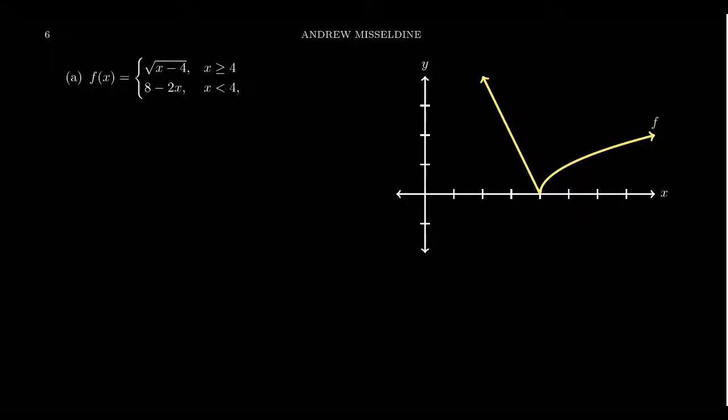Piecewise functions are those made from pieces of other functions. It's kind of like Dr. Frankenstein making his monster by taking the spleen of a radical function, plus the pinky toe of an exponential function, plus the liver of a power function or something like that. We piece together and make this monster function.